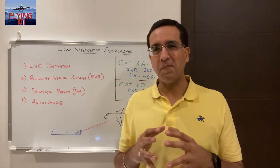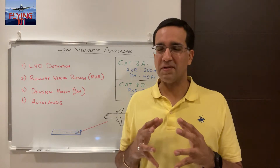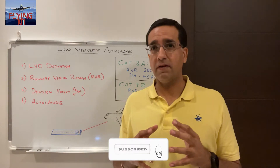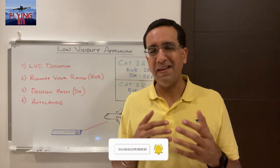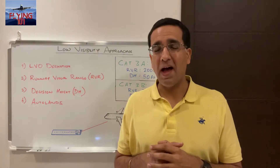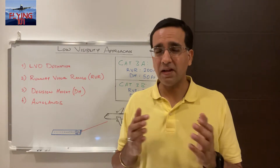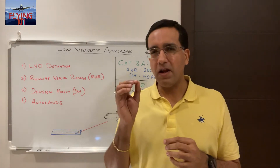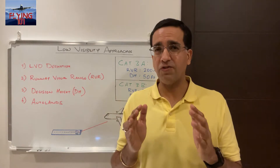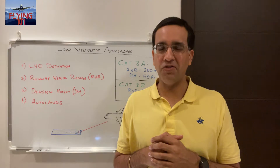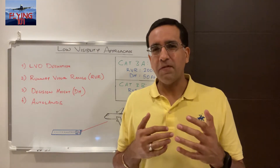We'll try and keep the concepts as simple as possible. Low visibility ops are all-weather operations — as a blanket terminology, they are defined as any taxi, takeoff, or landing in low visibility conditions where the visual reference is limited by the weather conditions. In other words, the visibility is a very limiting factor, and this calls for special requirements and procedures to be in place.